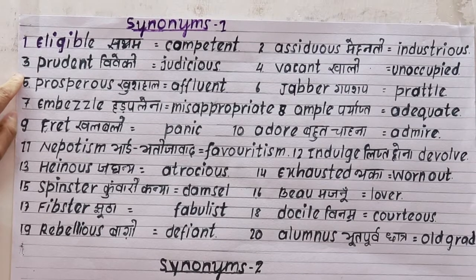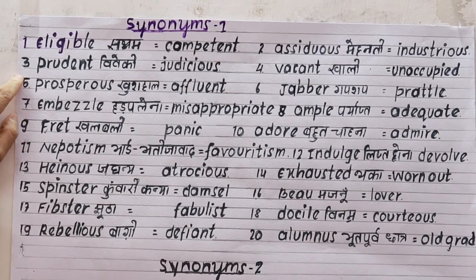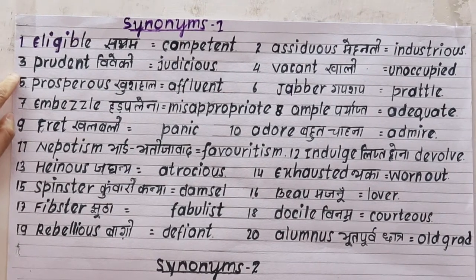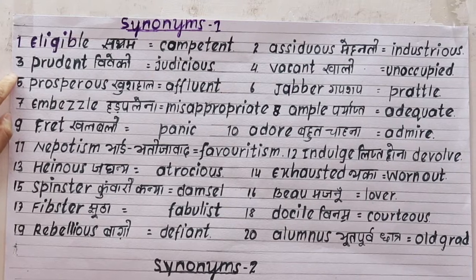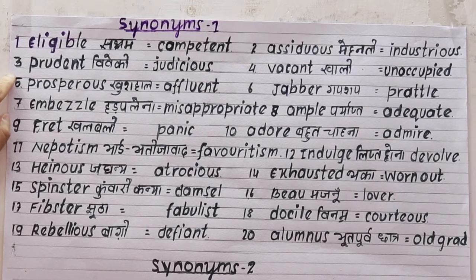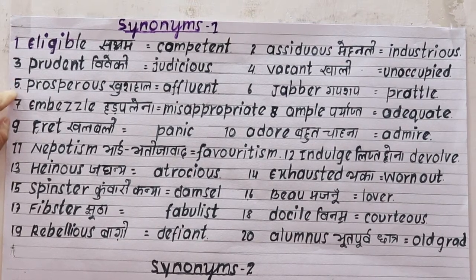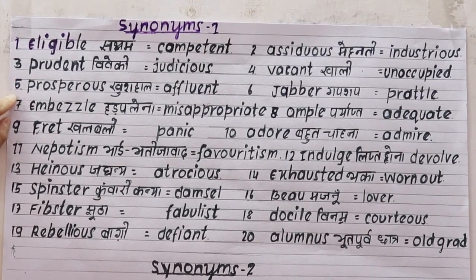Number two is 'prudent', meaning intelligent or wise. The synonym is 'judicious'. For example: the judge is a very judicious-minded person.